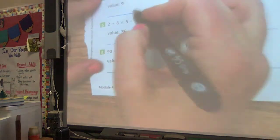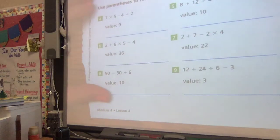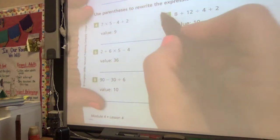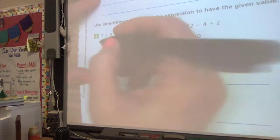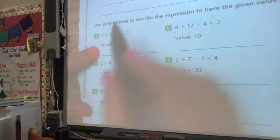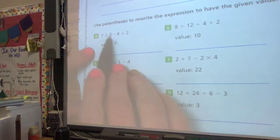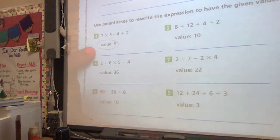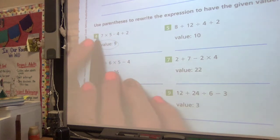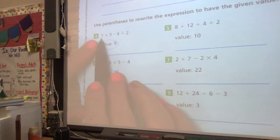Let's go down to these at the bottom. We can get some good practice right here. It says use parentheses to rewrite the expression to have the given value. We're going to see a lot of problems like this. So for this one, they want the answer to be 9. You need to add parentheses to make sure your answer is 9. This is a little bit of guessing and checking.